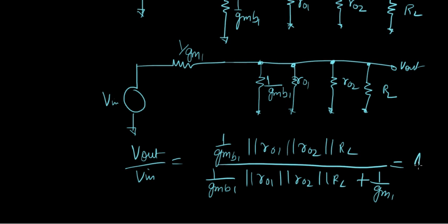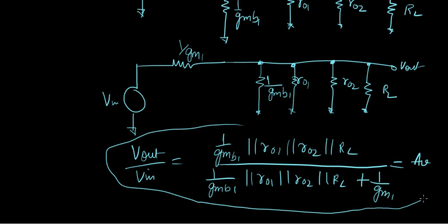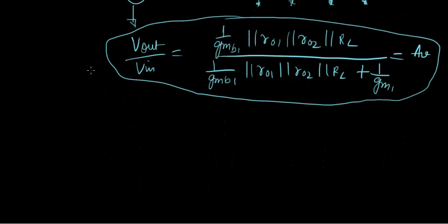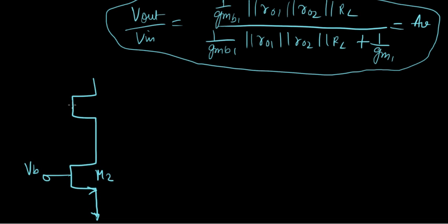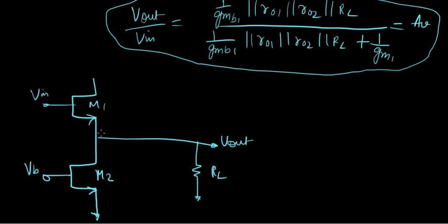This is what Av is. Now I want to show you a method where you don't have to draw the entire small signal model or the Thevenin equivalent, and you can directly arrive at this result. That's what is really exciting about this video. Let's draw this all over again. This is M2, this is Vb for M2, Vin for M1, and this is Vout right here, and this is RL.